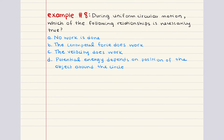Let's move on to problem eight. Problem eight asks: during uniform circular motion, which of the following relationships is necessarily true? Uniform circular motion refers to an object moving in a circular path with constant speed. Even though speed is constant, velocity is not constant because velocity is a vector depending on both speed and direction. In uniform circular motion, the direction of velocity is always changing. The centripetal force keeps the object in circular motion, always acting towards the center, and does not change the object's speed — it only changes the direction of velocity.